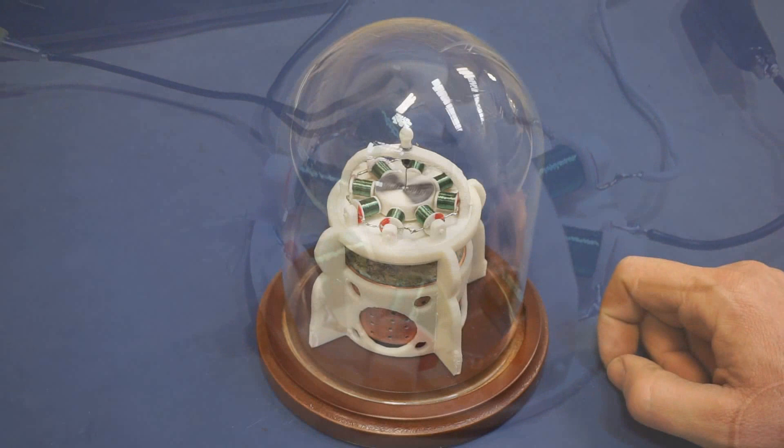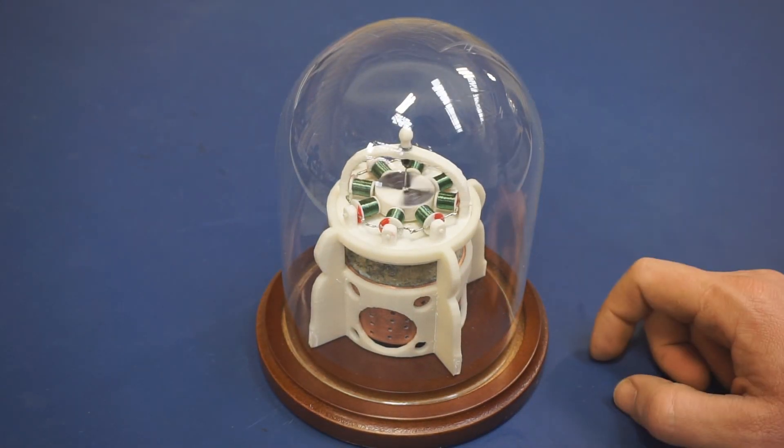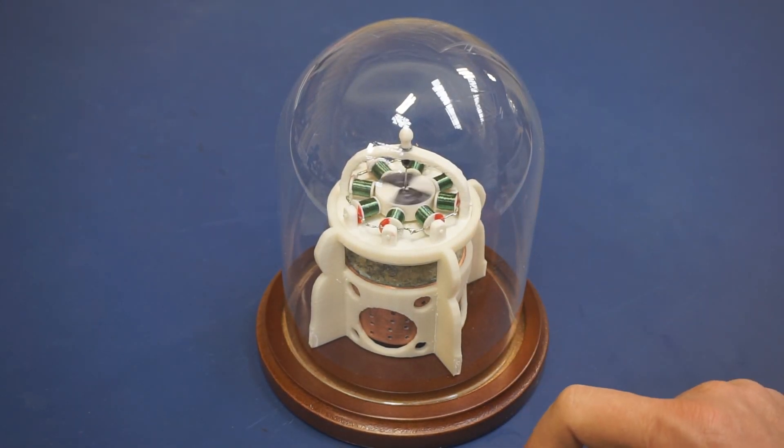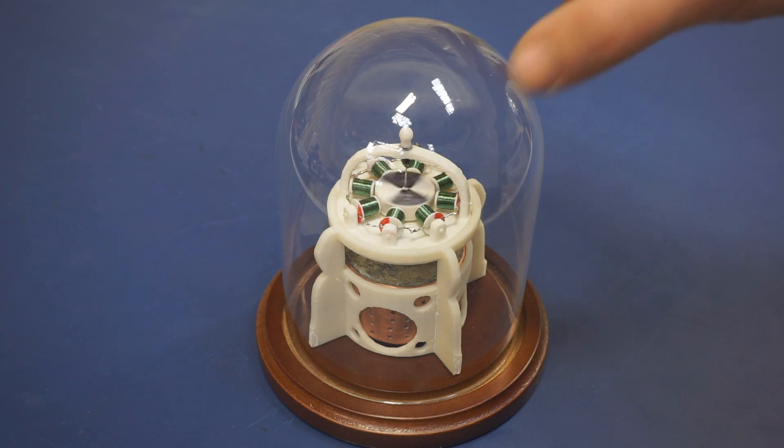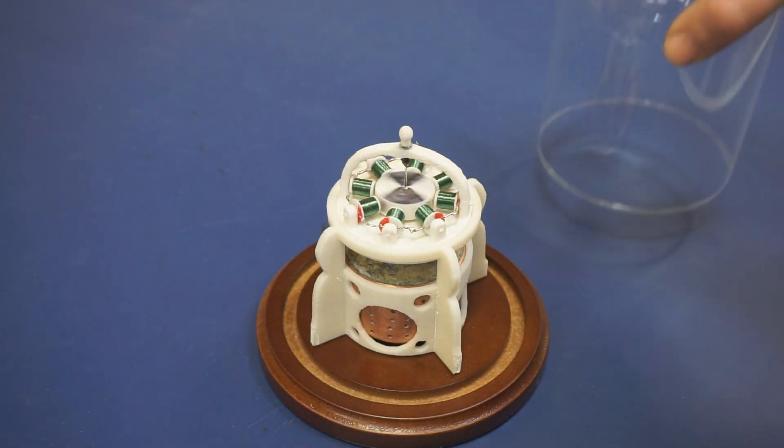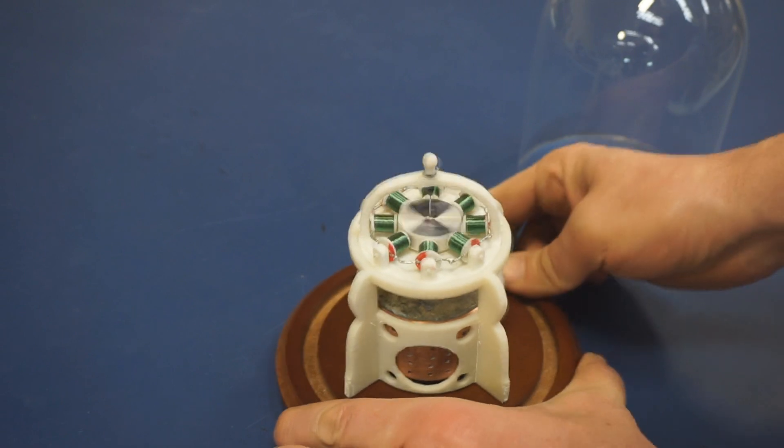The crystal cell is underneath the motor here. This is velcroed to the wood base with construction velcro, so you can remove it.